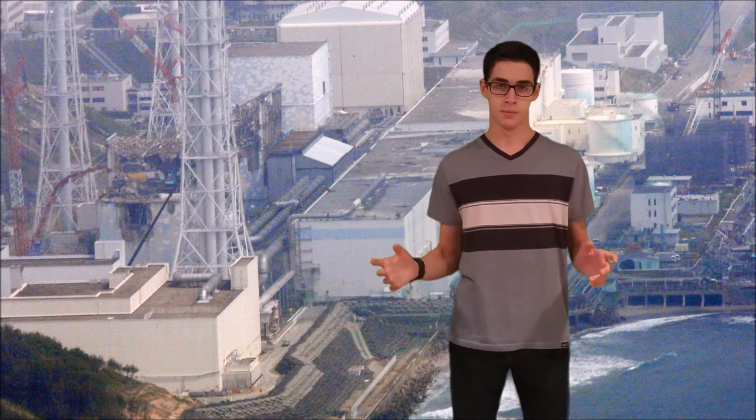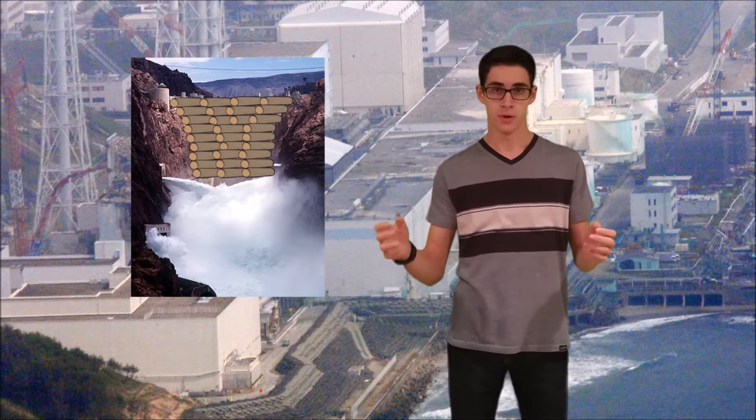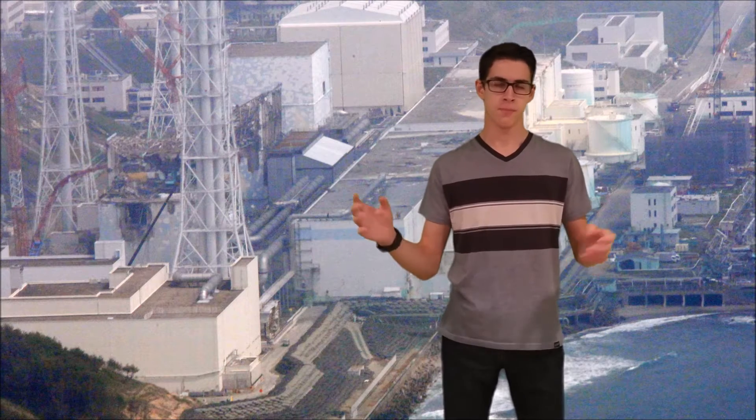Imagine if a major dam, say the Hoover Dam, was built out of wood. It might last for a little while, but as soon as something happened, it would fall apart. This is what happened to the Fukushima reactor. It got hit by an earthquake and couldn't take the stress. The power got cut, and as a result, a meltdown ensued.